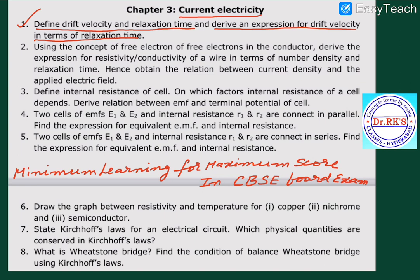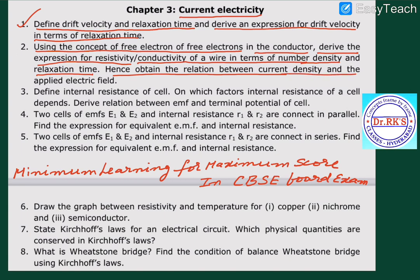The second question: using the concept of free electrons in the conductor, derive the expression for resistivity and conductivity of a wire in terms of number density and relaxation time. Hence, obtain the relation between current density and the applied electric field.